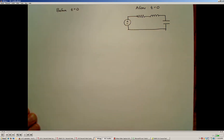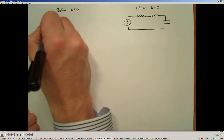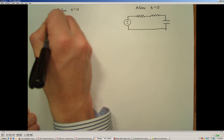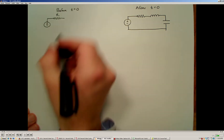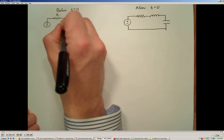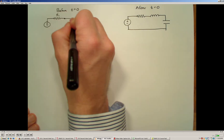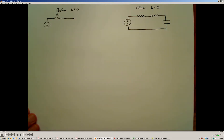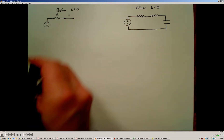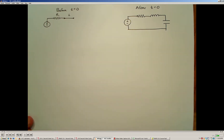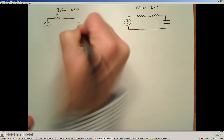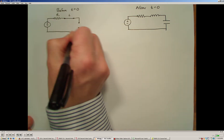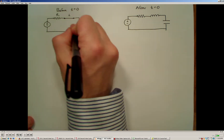Before time equals zero, we have resistor R1. We have an inductor, but because the circuit has been in a steady state condition, the inductor acts or behaves like a wire — because the magnetic field has been fully established and it's conducting as much as possible. We also have the capacitor, but because we're in a steady state condition before the switch opens, the capacitor behaves as an open circuit.